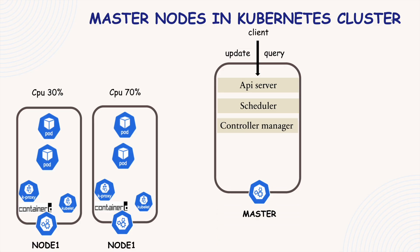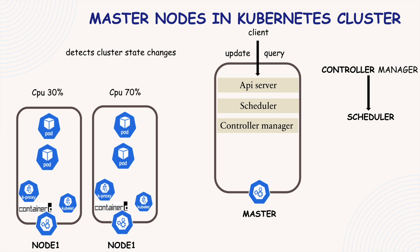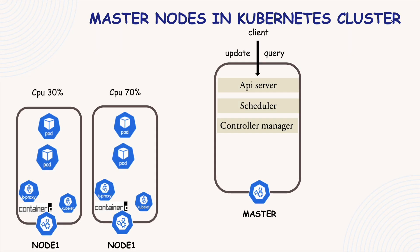The next important component is the controller manager — the one that keeps an eye on the whole cluster state and makes sure everything is running as expected. Let's say a pod dies on one of the worker nodes, maybe due to a crash or node failure. There has to be a mechanism to detect this change, and that's exactly what the controller manager does. It constantly watches the actual state and compares it with the desired state. When it notices that a pod has died, the controller manager immediately takes action — it triggers a request to the scheduler to reschedule the dead pod. The scheduler then analyzes available resources across all worker nodes, picks the most suitable one, and instructs the Kubelet on that node to restart the pod. So the entire self-healing mechanism starts with the controller manager noticing that something went wrong.